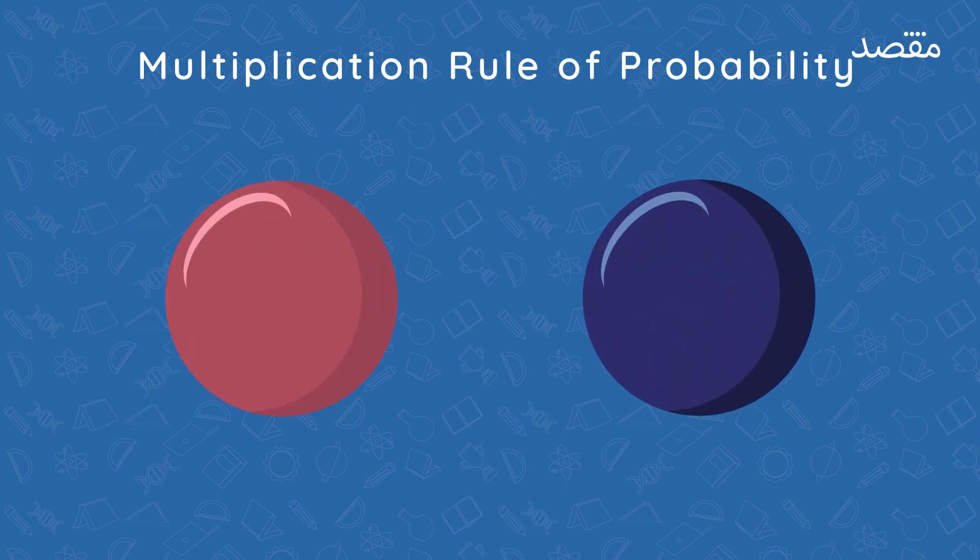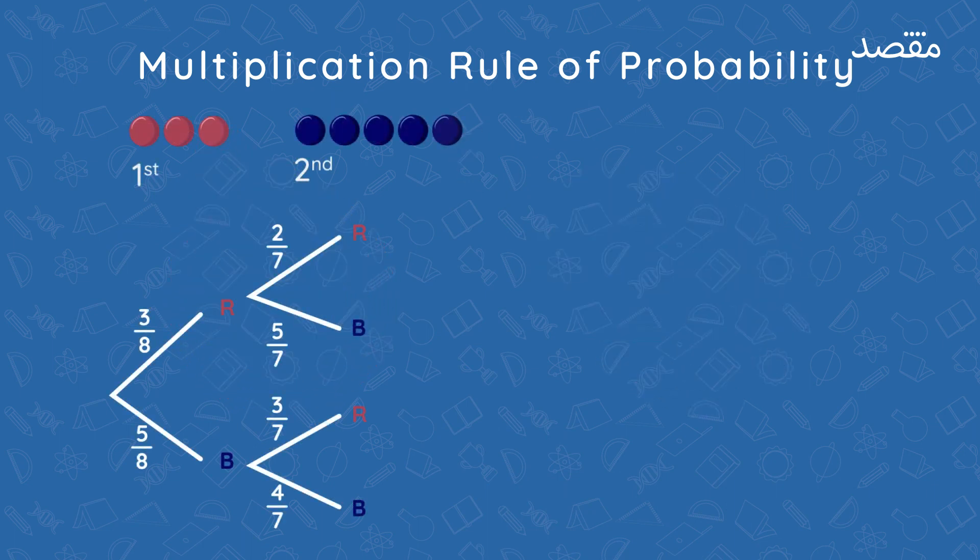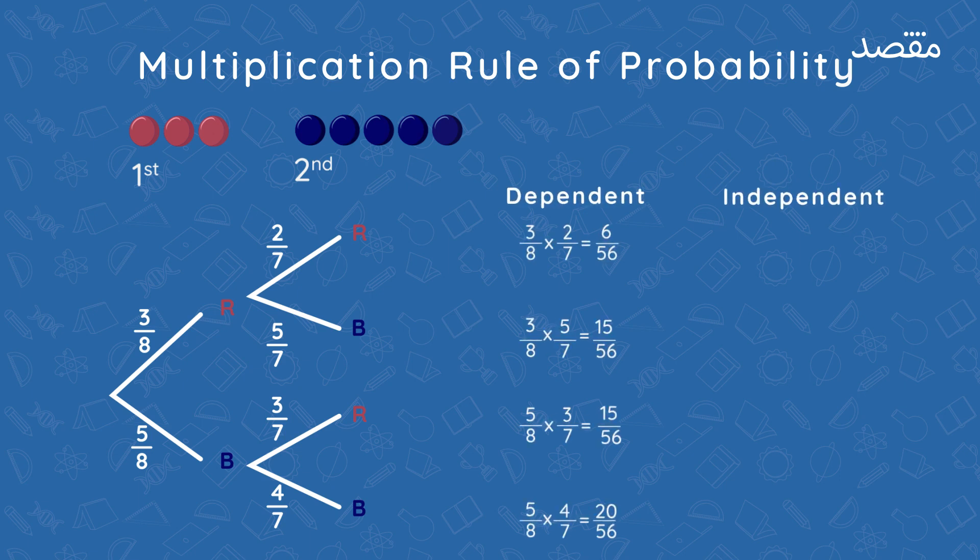Summarizing all we have discussed in this tree diagram, when events occur together, whether dependent or independent, we multiply probabilities. Like here probability of choosing a red ball first and blue ball next are multiplied. And like red red, blue red or blue blue, in all of them probabilities are multiplied.